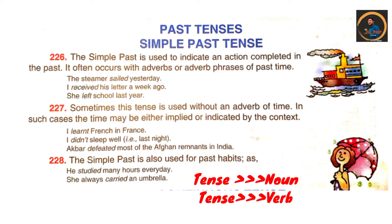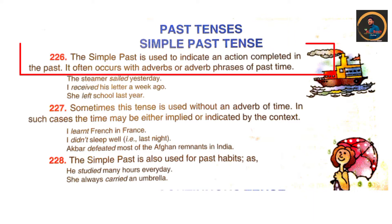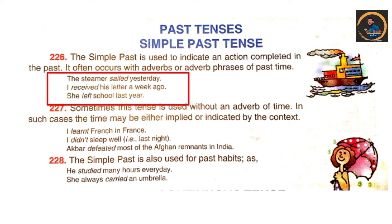Now we start our topic: simple past tense. The definition of simple past tense is — simple past is used to indicate an action completed in the past. It often occurs with adverbs or adverb phrases of past time. It means past tense shows an action that happened in the past at a specific time. For example: 'I received his letter yesterday,' 'a week ago,' 'she left school last year.'